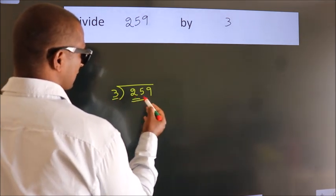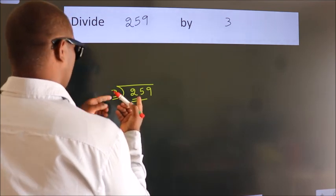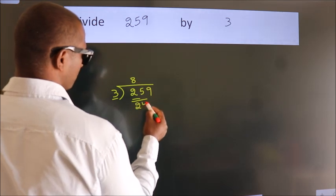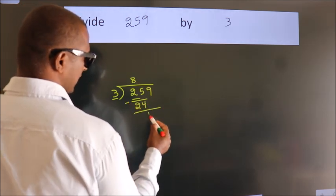So we should take 2 numbers, 25. A number close to 25 in the 3 table is 3 times 8, 24. Now we should subtract. We get 1.